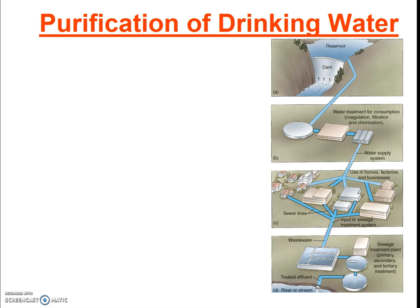The other type of water treatment that's important for each and every one of us is drinking water purification. Don't get these two mixed up — wastewater treatment is the treatment that happens to the water we're emitting from our households through our drains and toilets. Drinking water treatment is the treatment that occurs before the water gets to our house to make it suitable for us to drink. Drinking water purification differs from location to location, and the typical steps are those I'm going to list here, though not every step is used in every treatment plant.